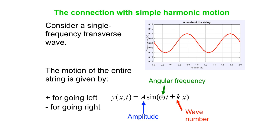Just to summarize, we have a single frequency transverse wave. The motion of the entire string is given by y(x,t) = A sin(ωt ± kx). Got your angular frequency, your amplitude, and your wave number. Use the positive sign if the wave is going left, and the negative sign if the wave is going to the right.